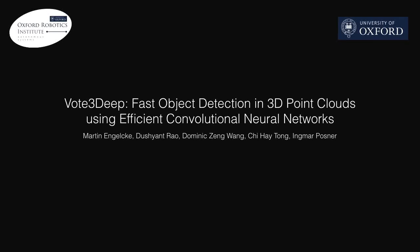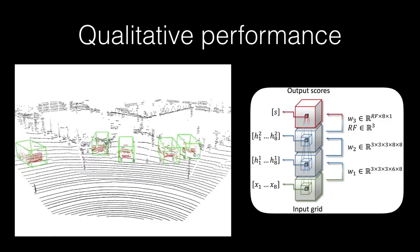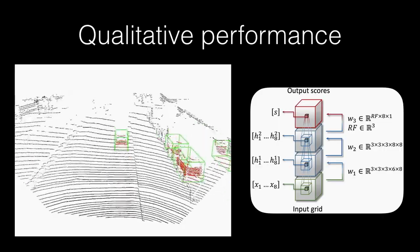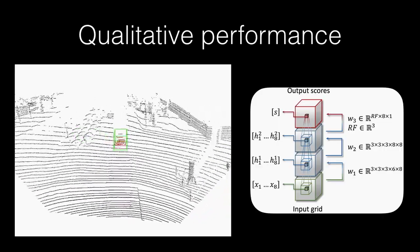Our work addresses the challenge of performing efficient model-based object detection in 3D point clouds. We propose a neural network-based approach which specifically exploits the sparsity inherent in 3D data.